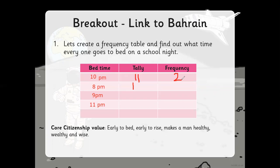This is how you create a frequency table — by collecting data from those around you, storing it in a table, which makes it easier to interpret. For example, you might say there are three people who sleep after 8pm — at 9, 10, and 11 — so more people in your house sleep after 8pm. That is how you interpret information from a given table.